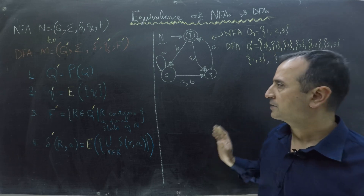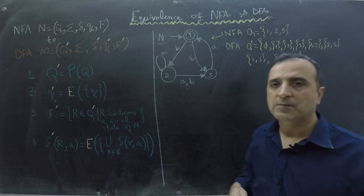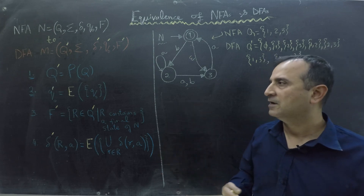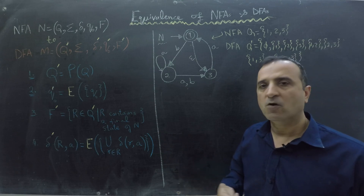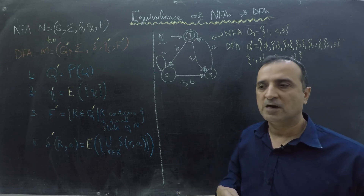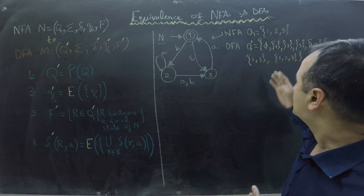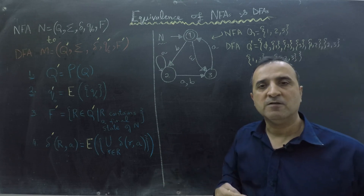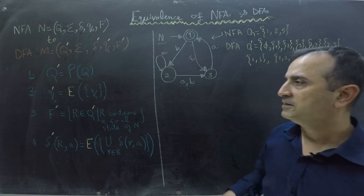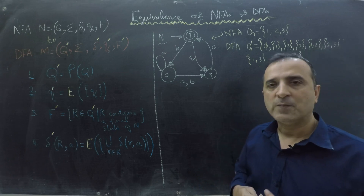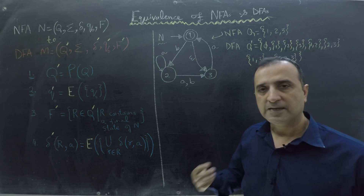I can start making a DFA right away with all of those states, but I'm going to use a trick. I'm going to start from the start state and will only make states which are reachable via the start state, because some of those states will never be reachable. So let's find out what will be the start state of our DFA.